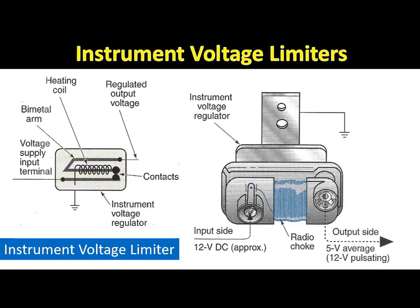An instrument voltage limiter may be connected to bimetallic gauges. This limiter contains a set of contacts mounted on a bimetallic strip, and the voltage supplied to the gauges passes through the limiter contacts. A heater coil surrounds the bimetallic strip and is connected to ground. The instrument voltage limiter must be grounded on the instrument panel, and that panel must have a satisfactory ground connection to the battery. If the limiter does not have a satisfactory ground, the limiter contacts remain closed and supply 12 volts to the gauges, which will damage them very quickly.